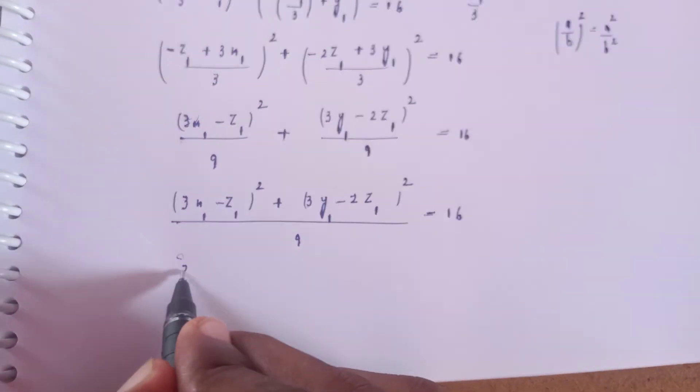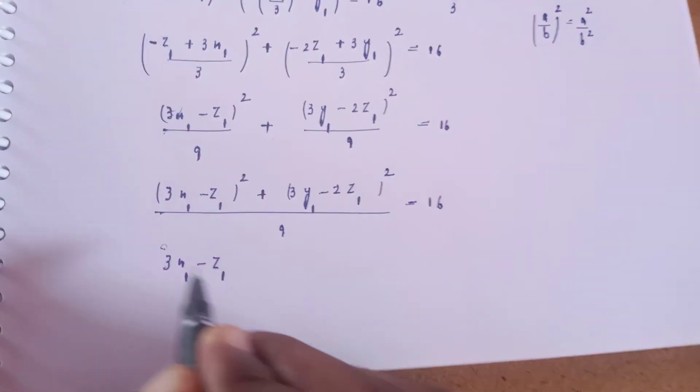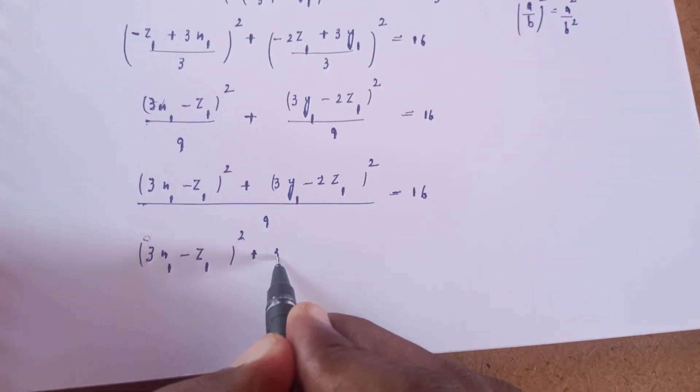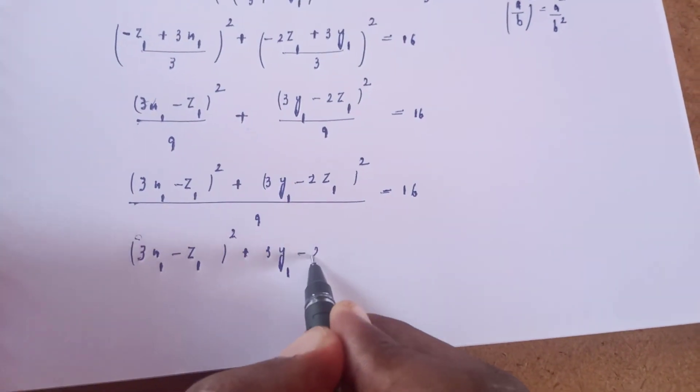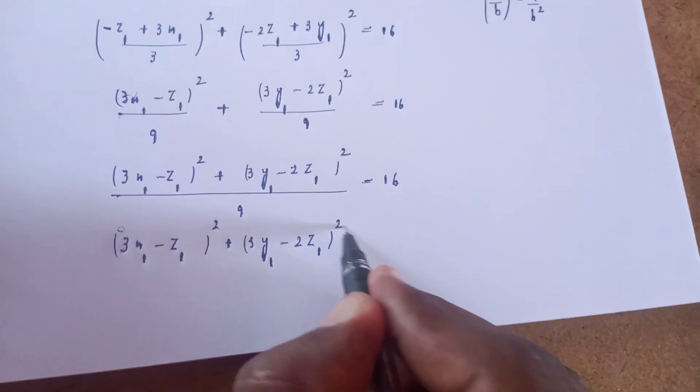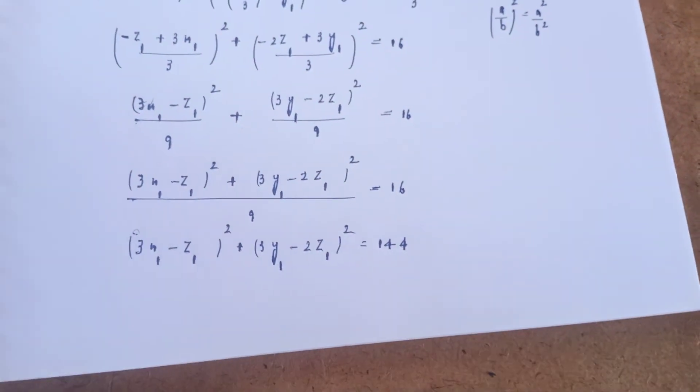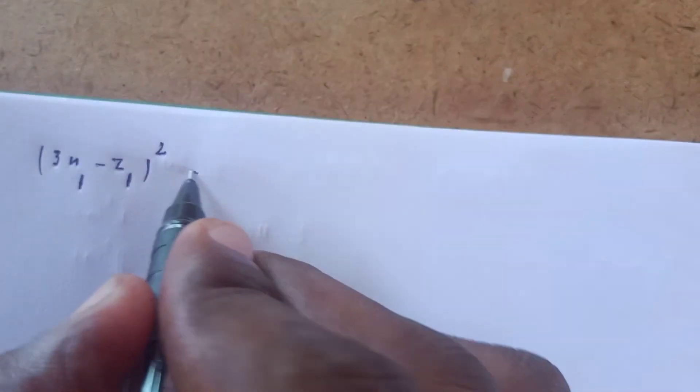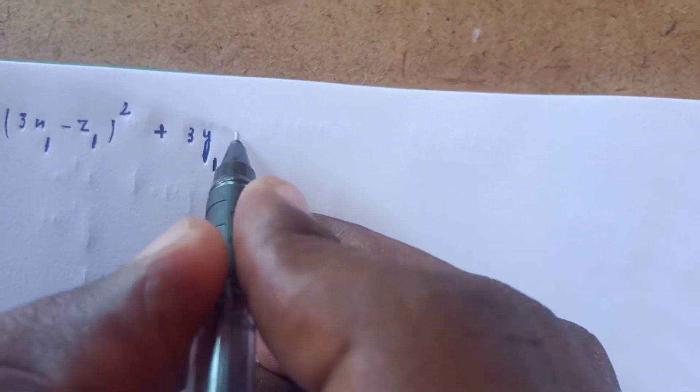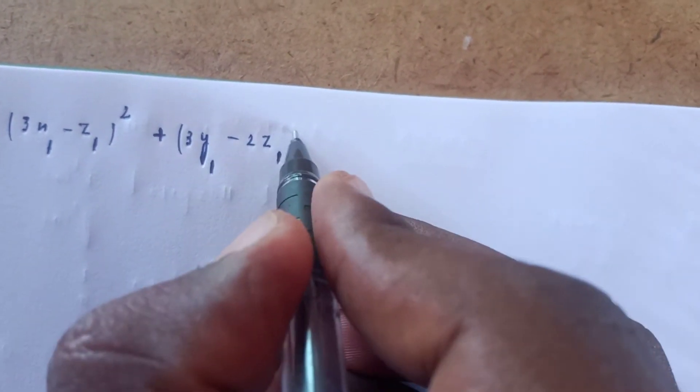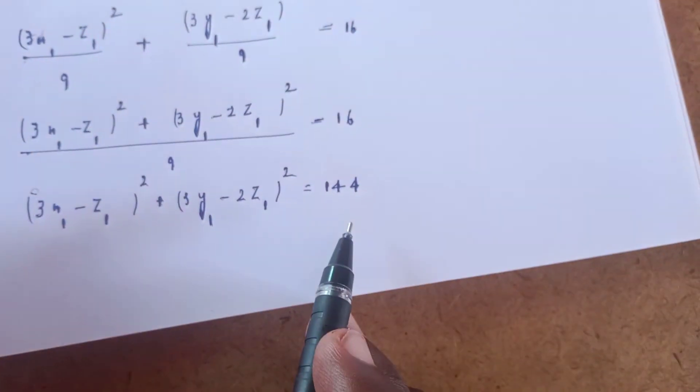Multiplying by 9 gives (3x₁ - z₁)² + (3y₁ - 2z₁)² = 144.